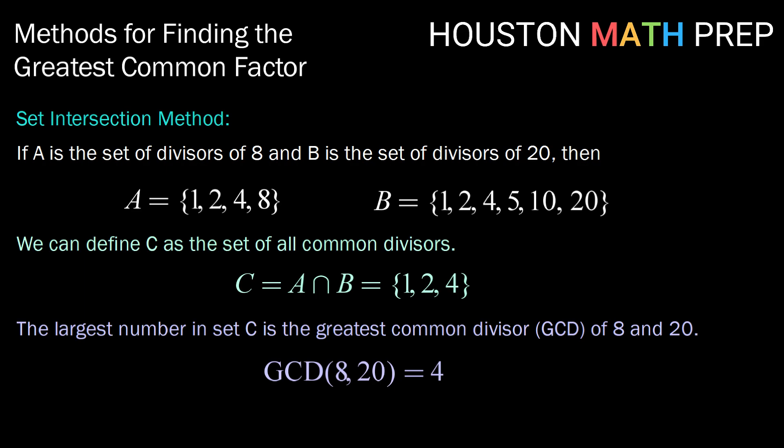So that's one method, the set intersection method. If our numbers got quite large, this method might get quite tedious. For example, listing out all the divisors of, say, 420 might take us quite a long time. So we might want a different method.